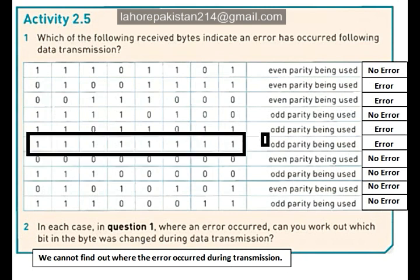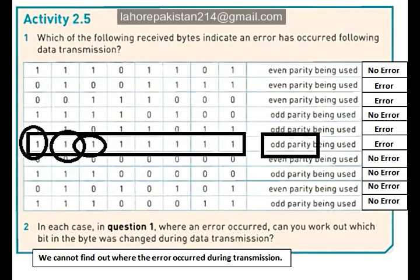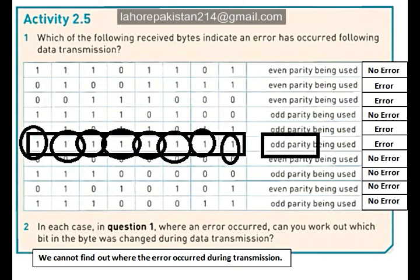Now let's look at the sixth byte, in which you are required to have odd parity. Let's count the number of ones: 1, 2, 3, 4, 5, 6, 7, 8. As you know, 8 is an even number and we were supposed to have odd parity, so an error has occurred during the transmission.